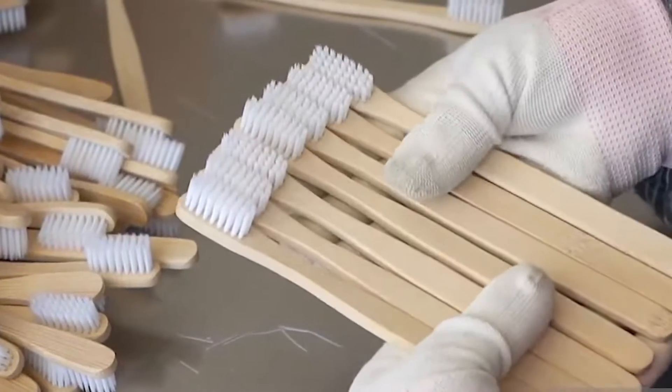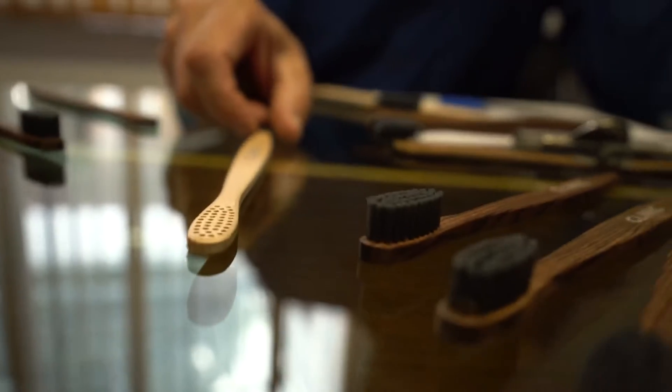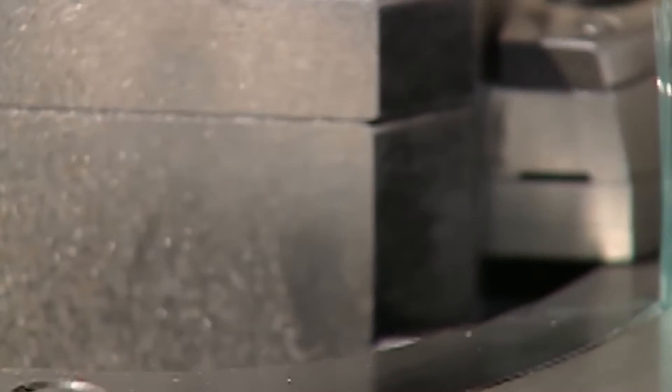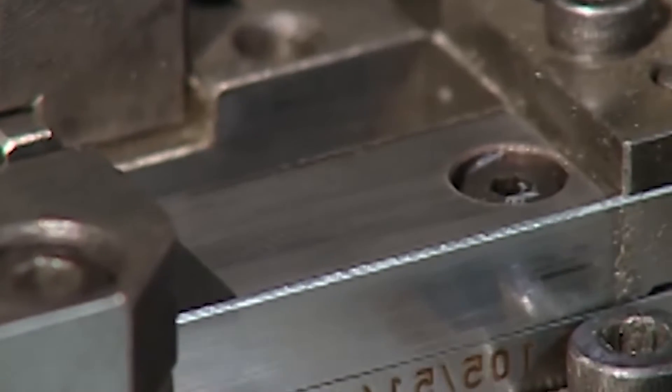For toothbrush handles made out of bamboo, plant-based bristles may be used or other eco-friendly alternatives. Once the bristles are ready, they are arranged into tufts. This process involves grouping the individual bristles together and securing them to a base.